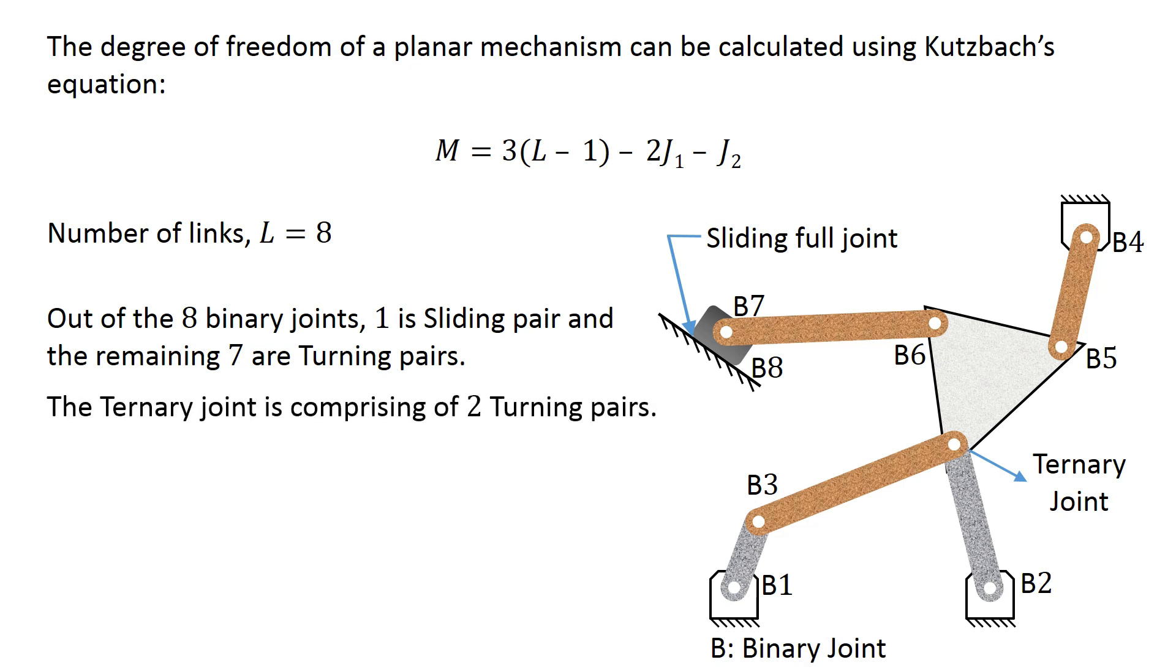The ternary joint is comprising of 2 turning pairs. So in all we have 9 turning pairs and 1 sliding pair, and all of them have 1 degree of freedom.